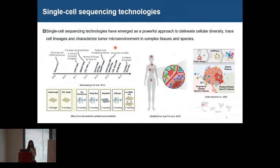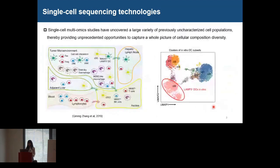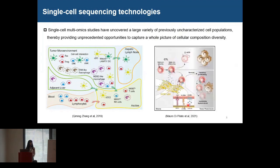Single-cell sequencing technologies have emerged as a very powerful tool to delineate cellular diversity, trace cell lineages, and characterize tumor microenvironment in complex tissues and species. Recently, a large number of previously uncharacterized novel cell populations have been identified. For example, in 2019, the LAMP3-positive dendritic cell was newly identified as a new subtype of the mature dendritic cell, and it has the potential to migrate to the hepatic lymph node and can interact with multiple lymphocytes and promote anti-tumor responses.